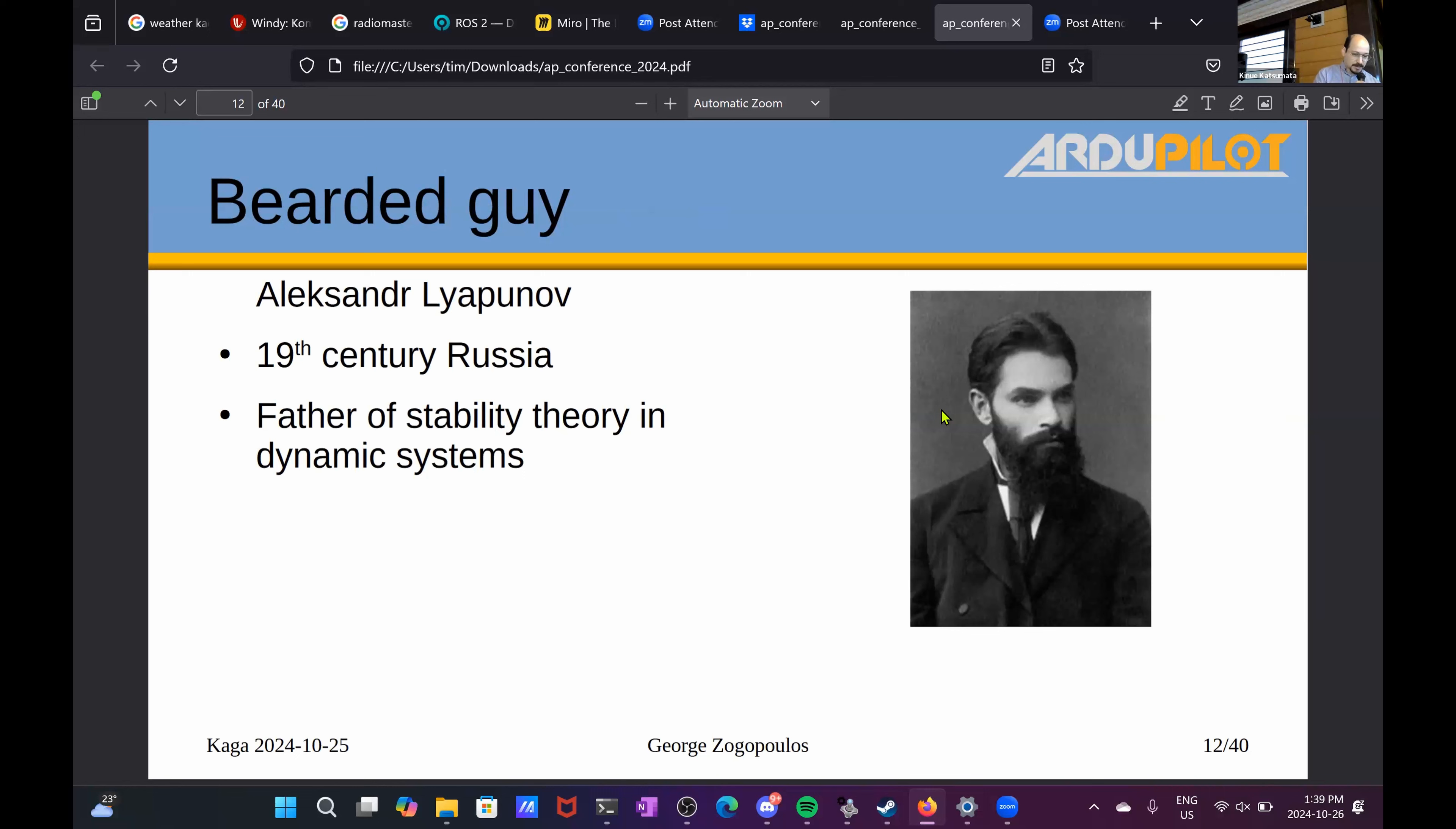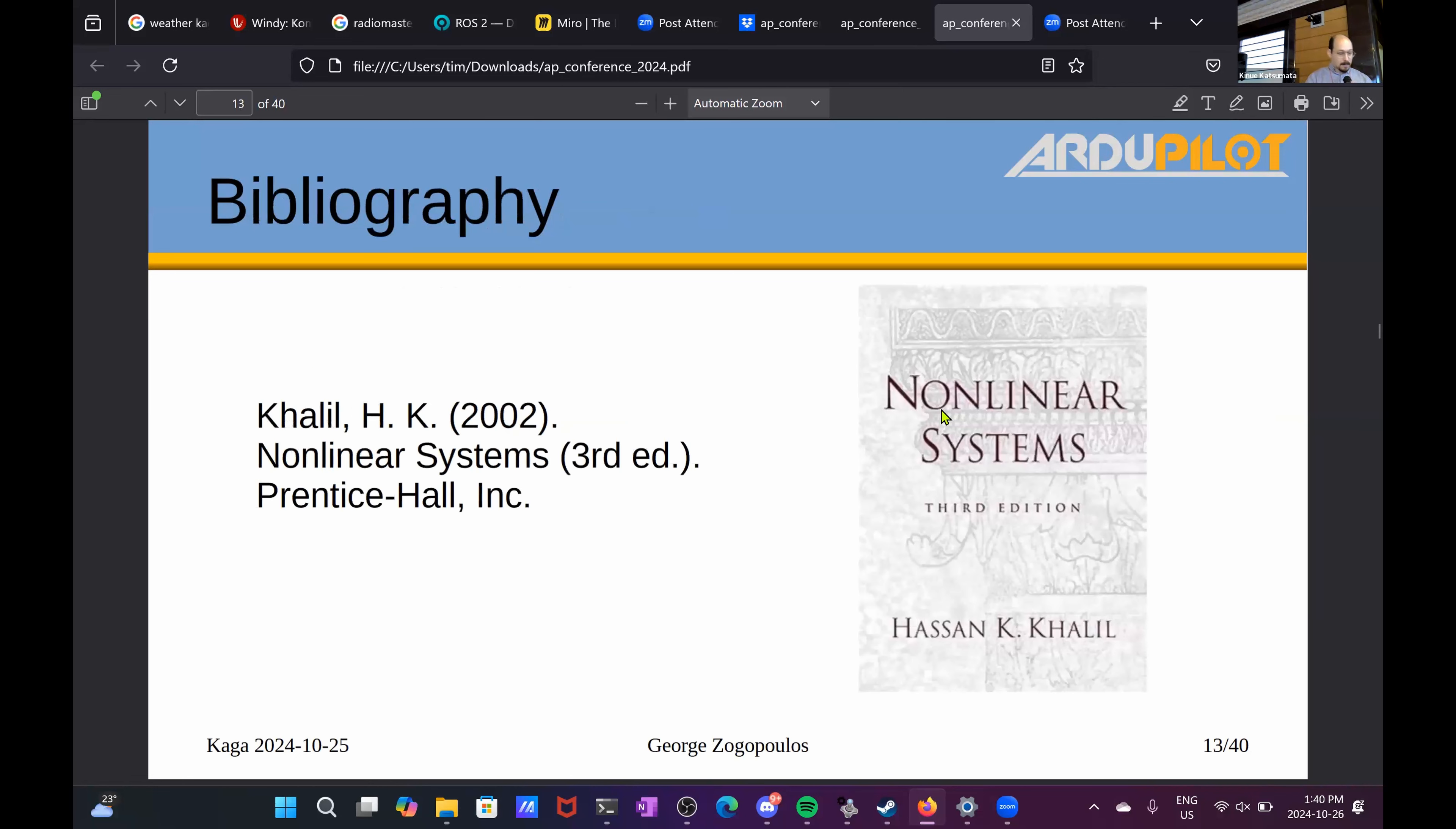And who do you turn to when you have one of these? 19th century Russian mathematicians most of the time. So the go-to guy for today is Alexander Lyapunov. He was born in 1857, so it's not exactly cutting-edge research we're doing here. He's considered the father of stability theory in dynamic systems, but yeah, I don't speak Russian.